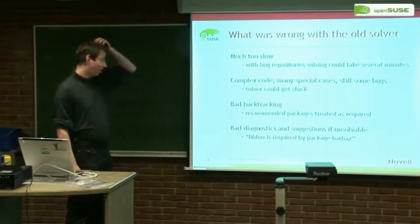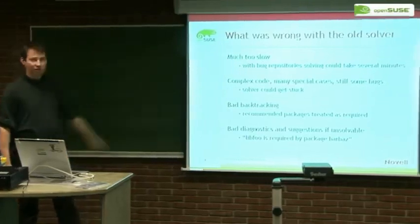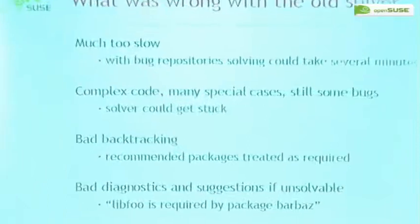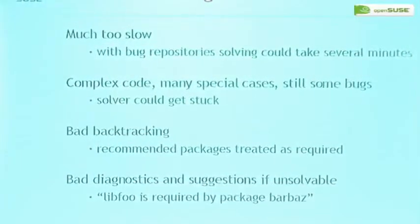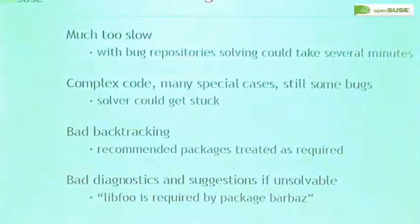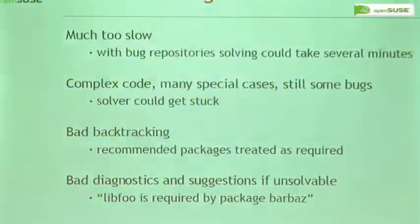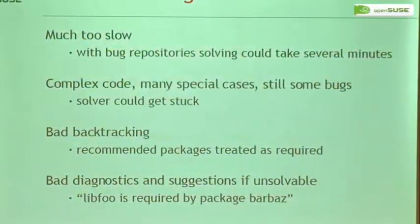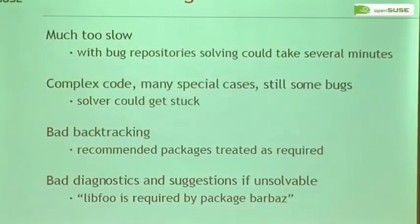We really had cases where solving took several minutes. The original red carpet solver branched at every alternative and tried every solution, then had a metric and chose the best solution at the end. But this turned out to be impossible with so many packages — openSUSE has about 10,000 packages — so part of that code got disabled very fast.